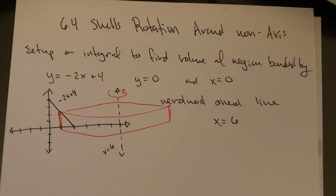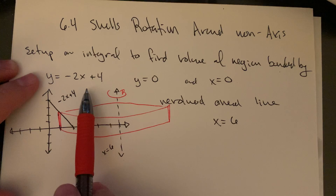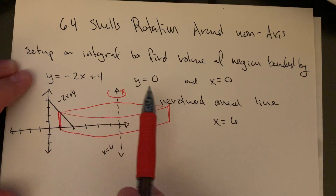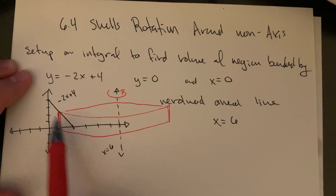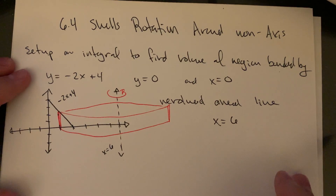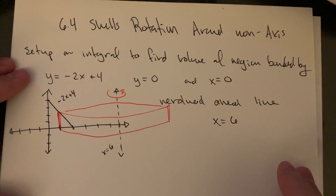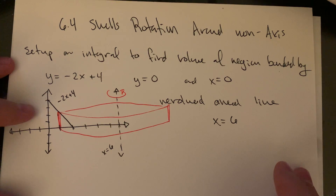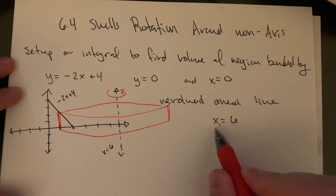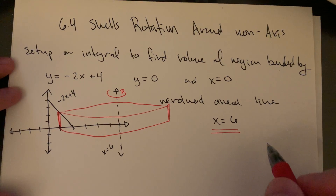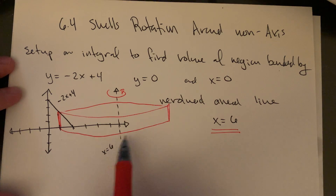Find the volume of the region bounded by y equals negative 2x plus 4, y equals 0, and x equals 0 — right in the first quadrant. This is a downward-sloping line: slope is negative 2, y-intercept is 4. Drop 2, go right by 1, and we get a triangle. We're rotating it around the line x equals 6.